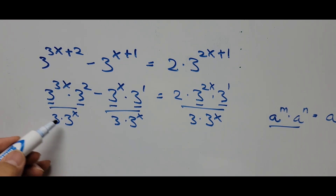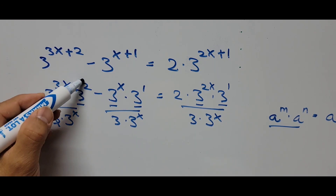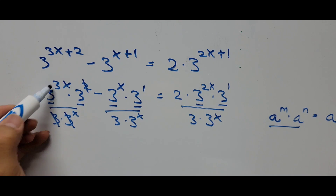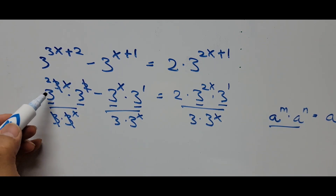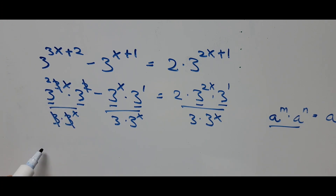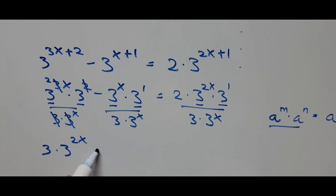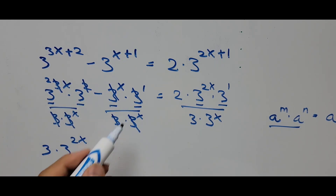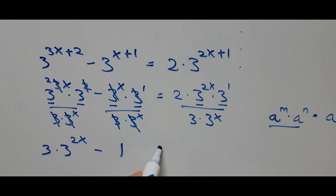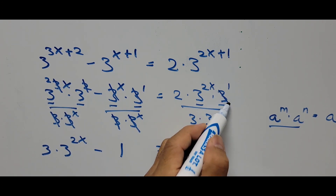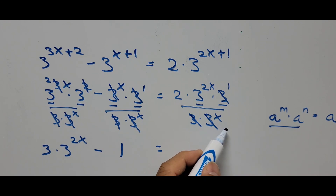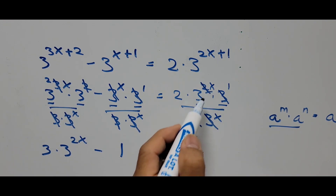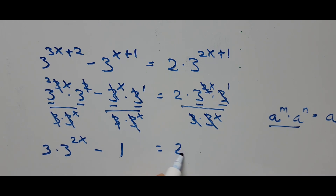After dividing, on the left side the first term: cancel the 3 and cancel 3 to the x from 3 to the 3x — that becomes 3 to the power 2x. The second term: cancel the 3 and cancel 3 to the power x — that turns out to be 1. On the right side, cancel the 3 and 3 to the power x from 2x — that becomes 3 to the power x, so the right side is now 2 times 3 to the power x.